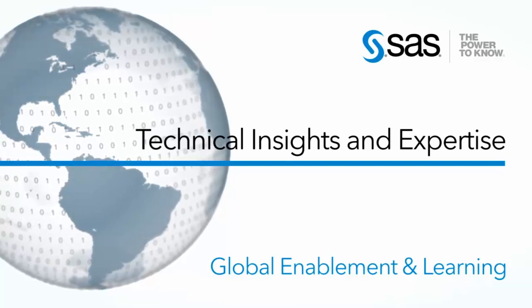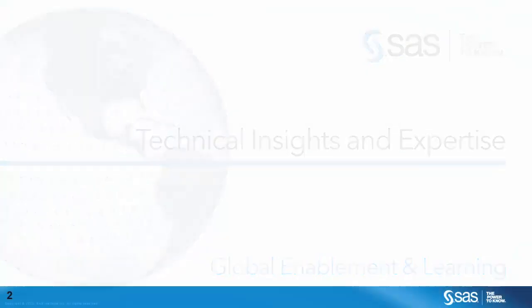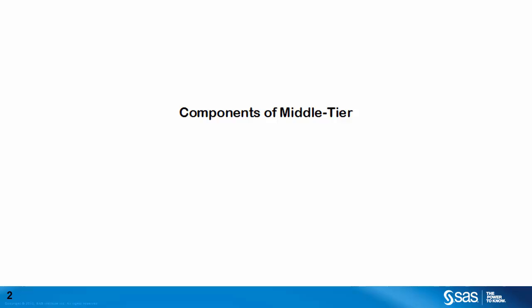I'm Stuart Rogers with SAS and this is the Technical Insights and Expertise series. Let's start by listing the components we will be considering for this overview of using HTTPS with the SAS middle tier. First, we have the client machine running a supported internet browser such as Google Chrome, Microsoft Internet Explorer, or Mozilla Firefox. For this overview we will exclude other client applications that connect to the middle tier, such as SAS desktop clients like Enterprise Guide or SAS Management Console and the SAS Mobile BI client. Next, we have the SAS web server.